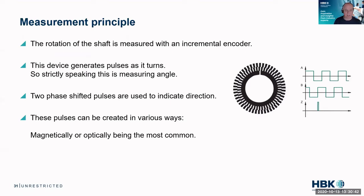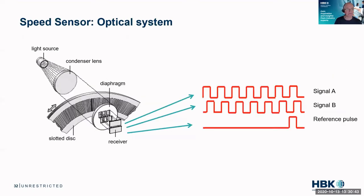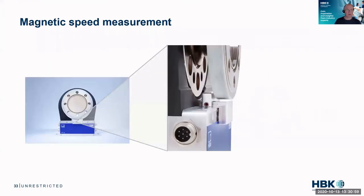These are the two most common methods. Optically, you have a disc with holes or interruptions, and you have light going through these slots. You detect this light coming in and from that you get your pulses.